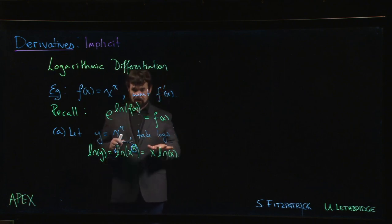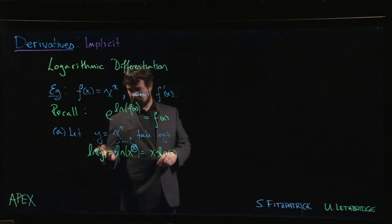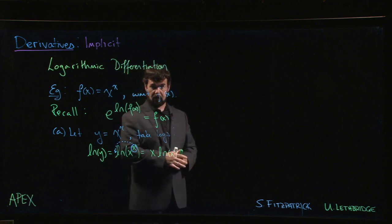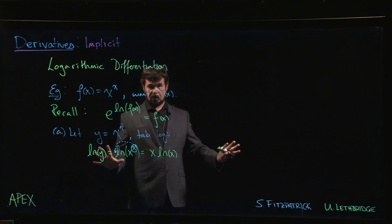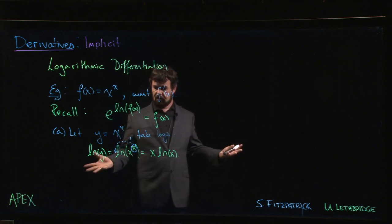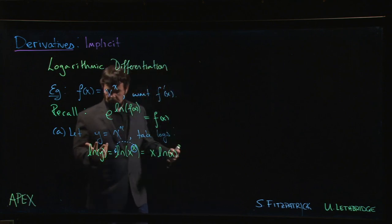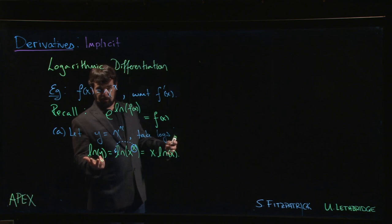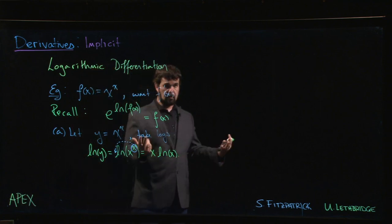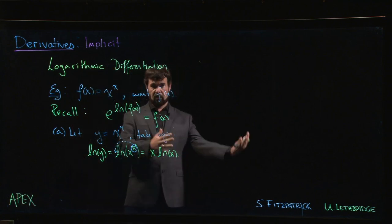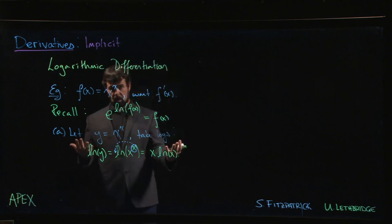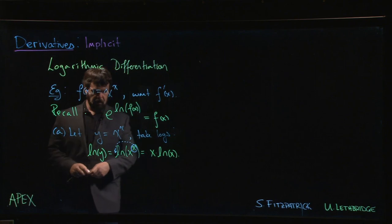Now if we ignore the middle part and just say the natural log of y is x times the natural log of x, we know how to do everything here. We want to take the derivative of both sides. Here we use implicit differentiation; here simply the product rule, because we've turned that exponent into a product. We know how to deal with derivatives of products.